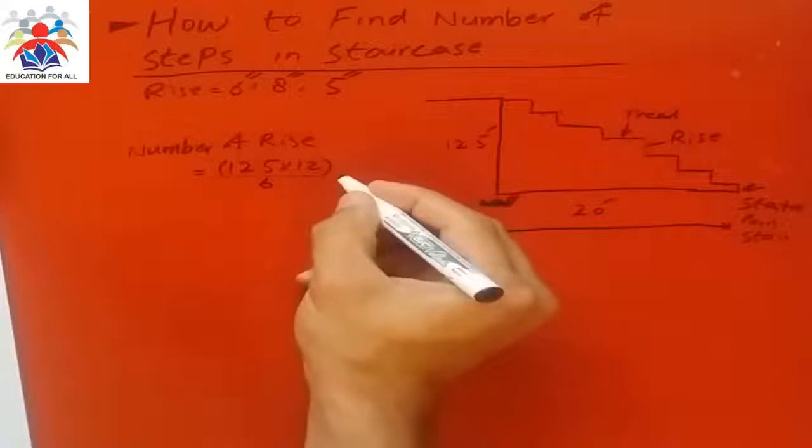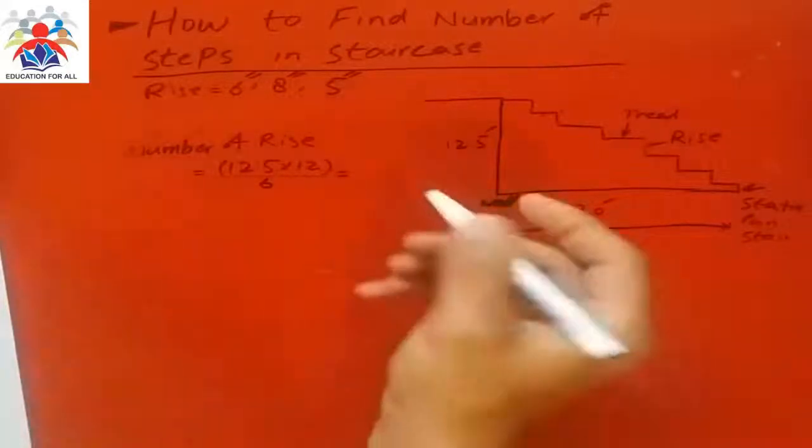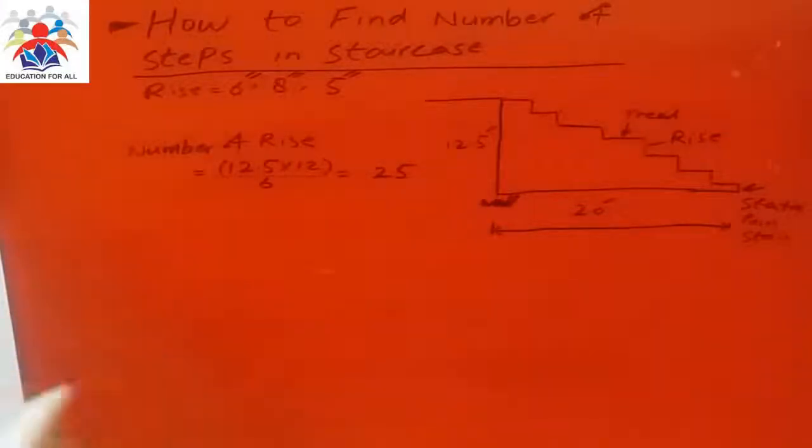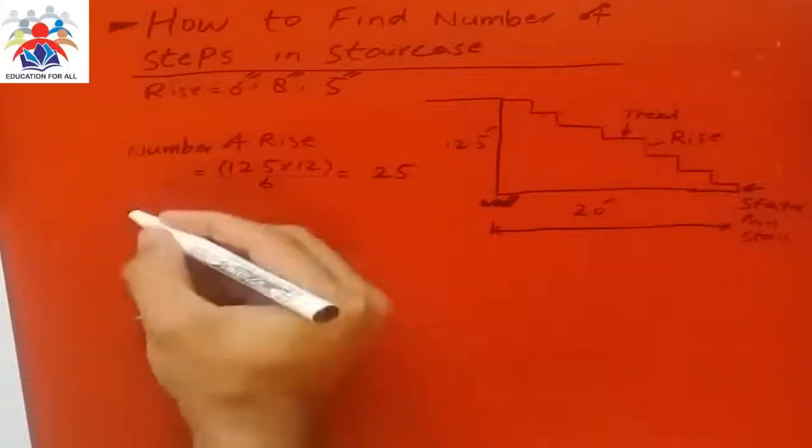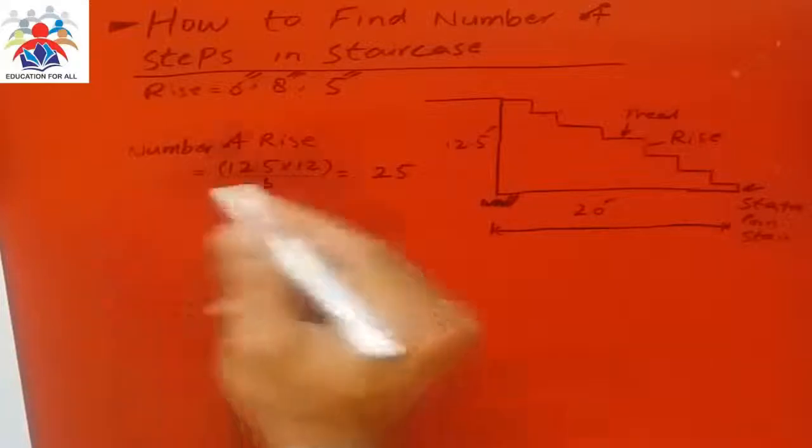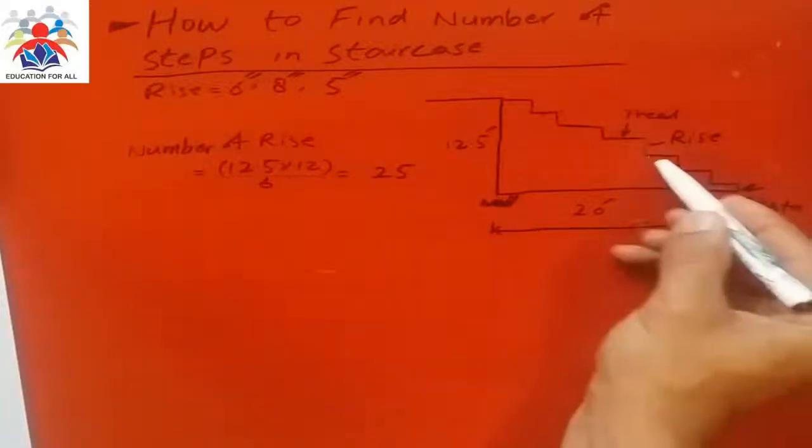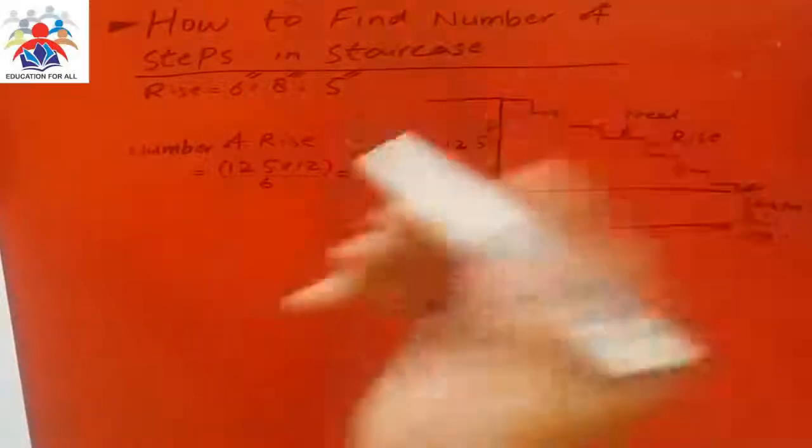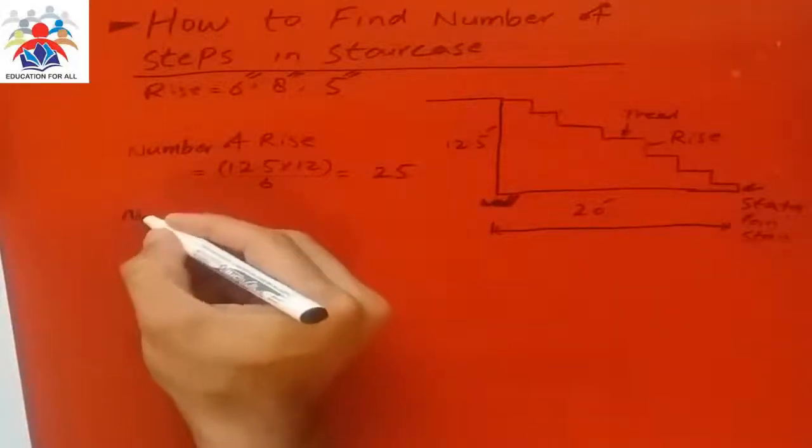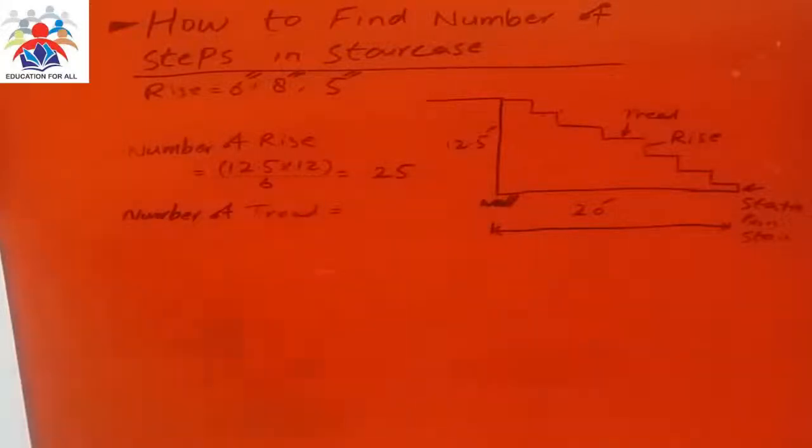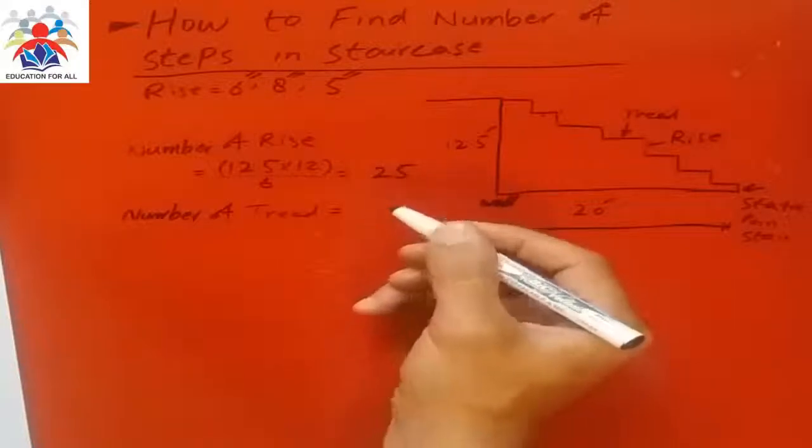Now what we have to calculate is the number of treads. So the rise we have is 25, and then we have number of treads. The number of treads is normally total rise minus one.